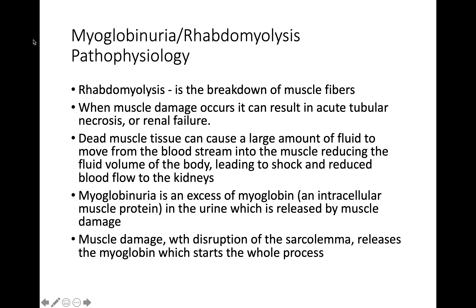Now we move to something much more severe: rhabdomyolysis and myoglobinuria. Rhabdomyolysis is a breakdown of muscle fibers resulting in the release of myoglobin into the bloodstream. It can cause myoglobinuria, where varying amounts of muscle protein appear in the urine. It usually follows major muscle trauma, especially crush injury, long-distance running, or exposure to electric shock. These large myoglobulin particles damage the glomeruli as they pass through the kidneys.